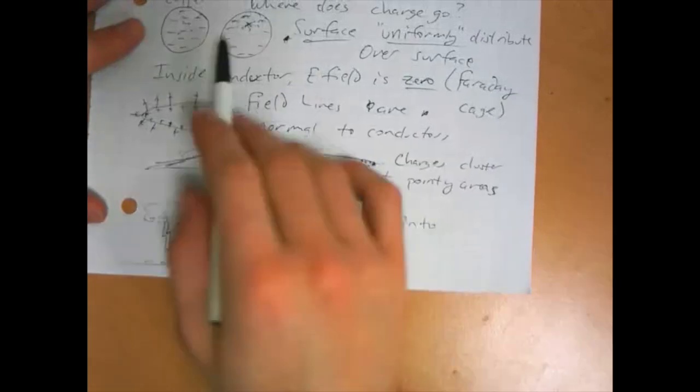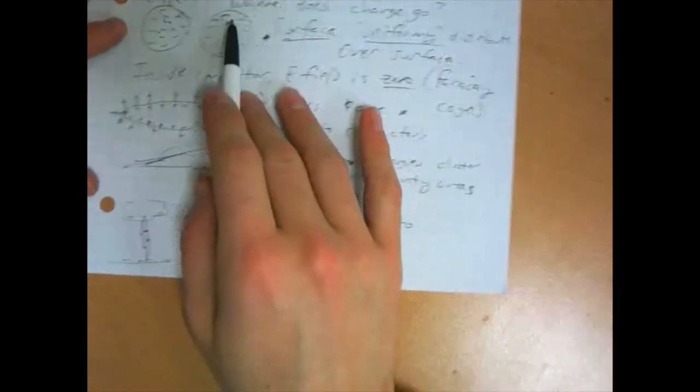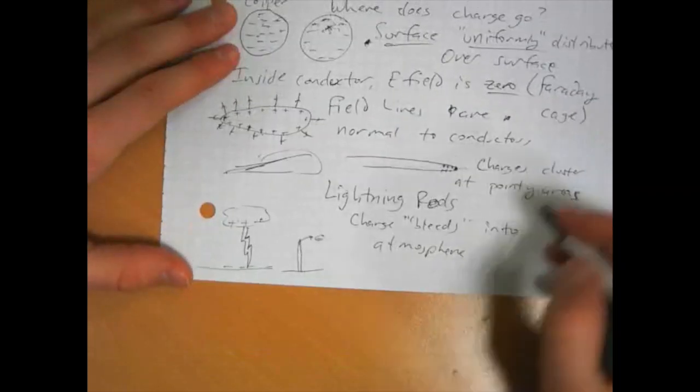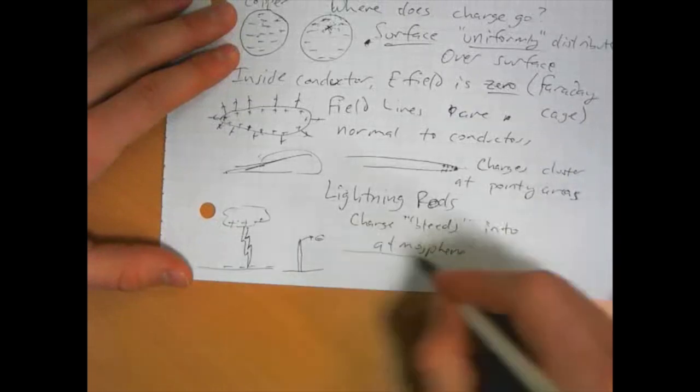And I also want to make the point, I mentioned this Faraday cage, and there's this phenomenon of there being zero field inside a conductor. This is known as shielding.